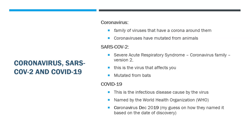SARS-CoV-2 stands for Severe Acute Respiratory Syndrome — that's the SARS portion. COV is short for the coronavirus family, and it's version 2. This is the virus that affects you, and it's been mutated from bats. It originated in China. It doesn't matter where it came from; we're stuck with it.